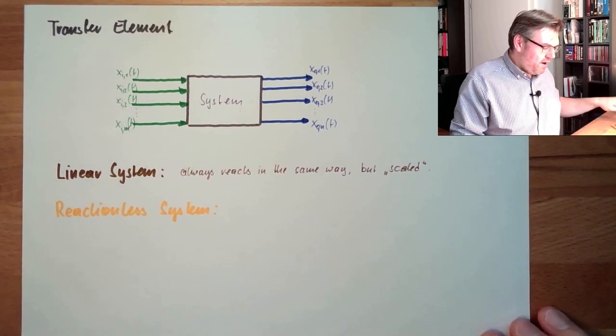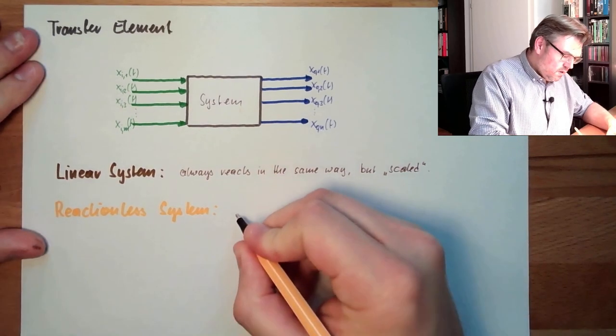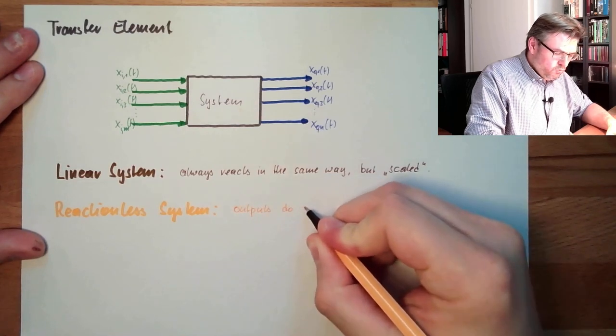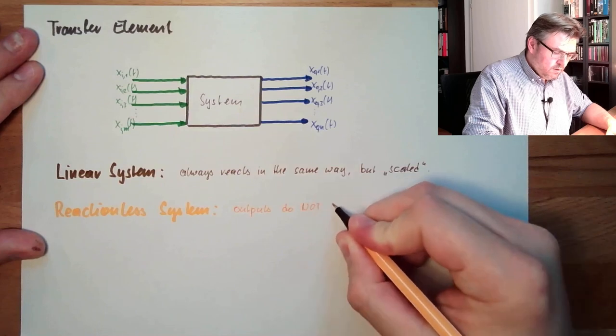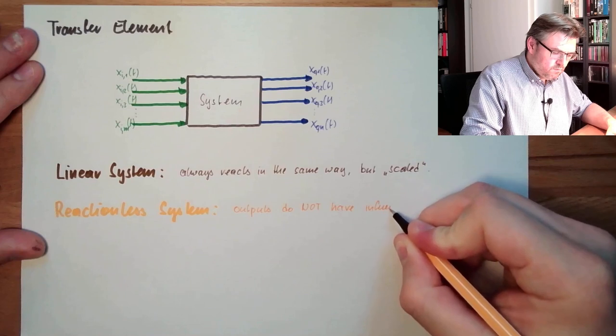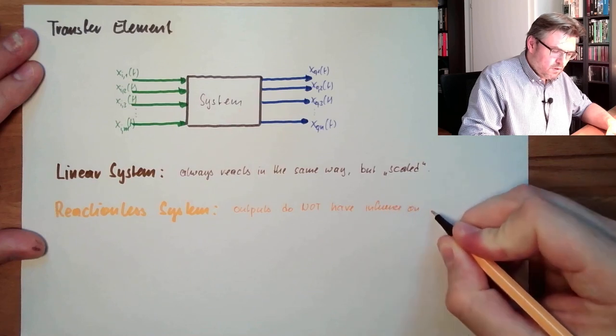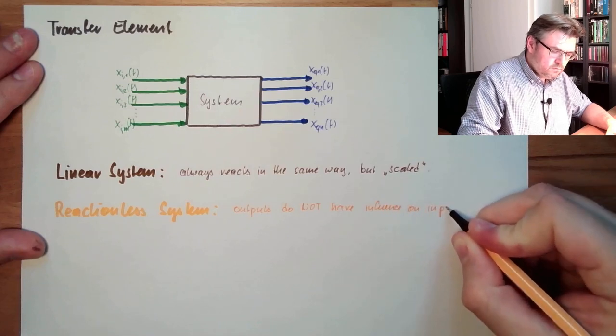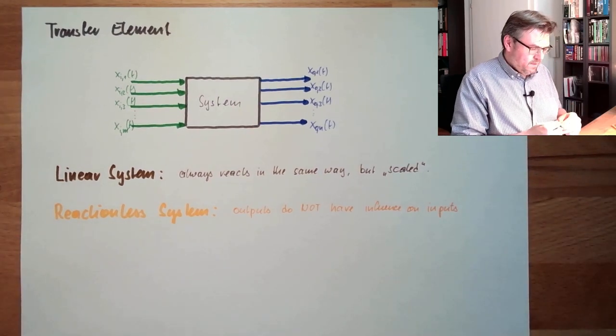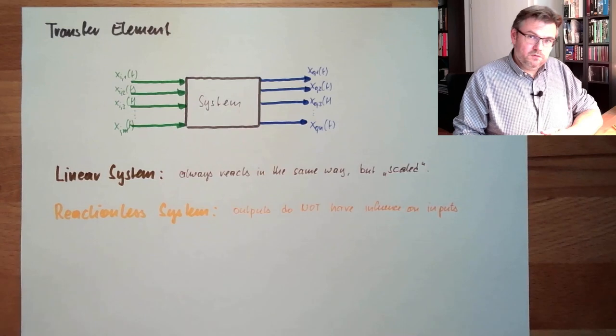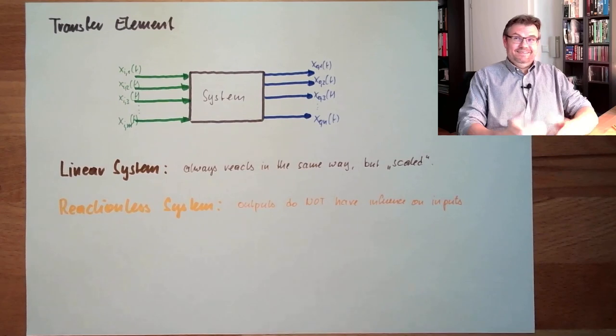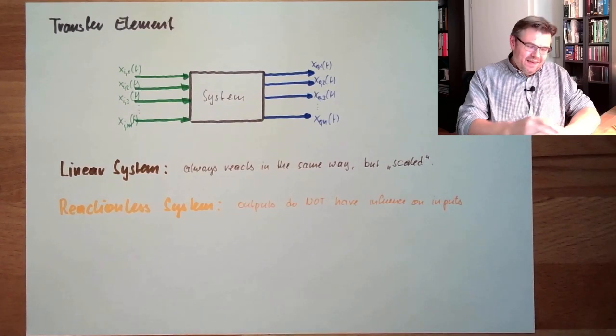So, there is no backfiring. Outputs do not have influence on inputs. Is this always fulfilled? Can tell you always or not. What sheltered? One example.